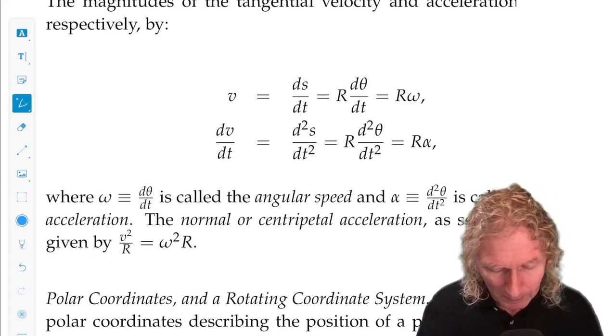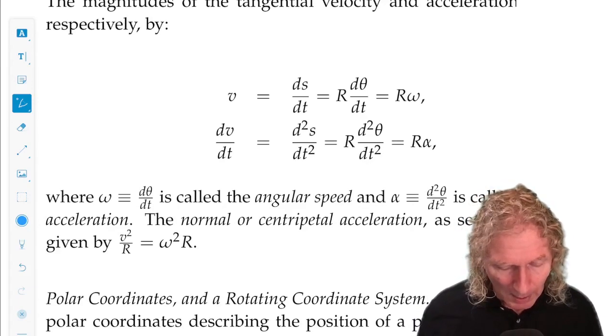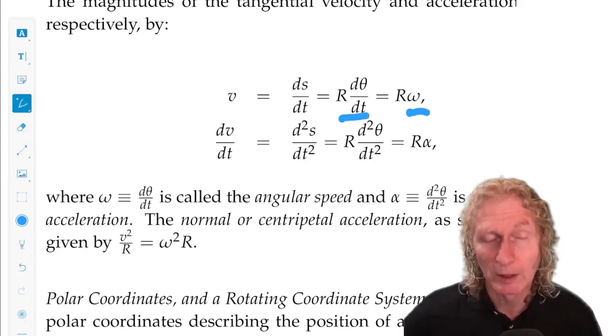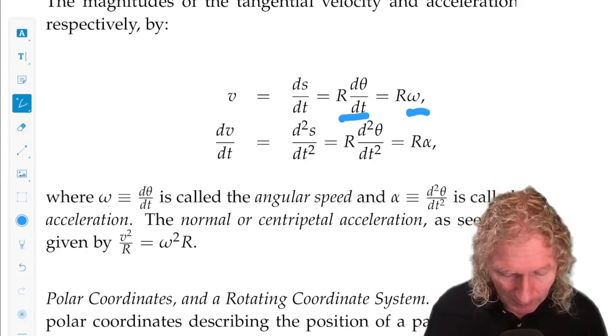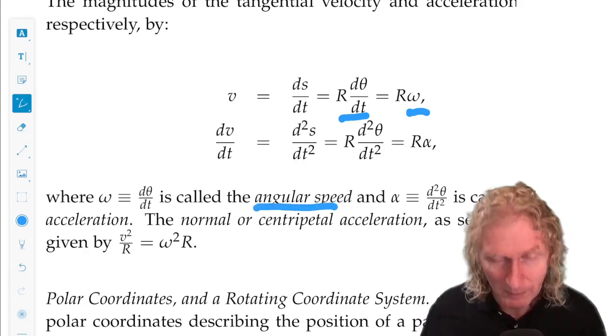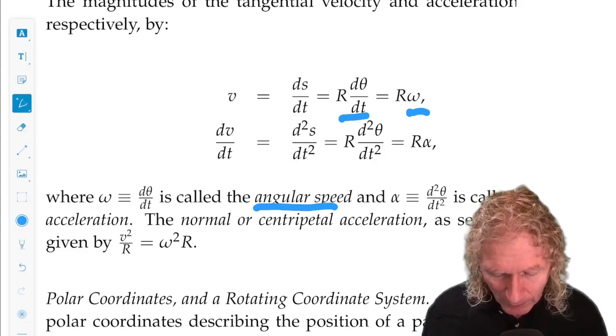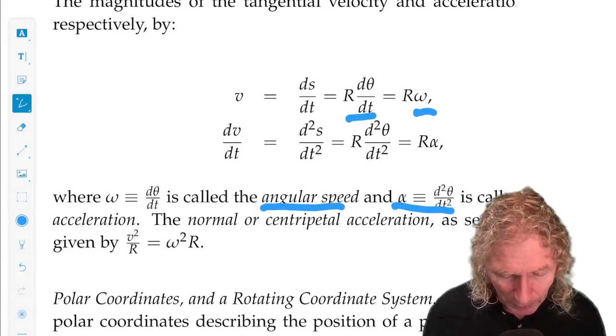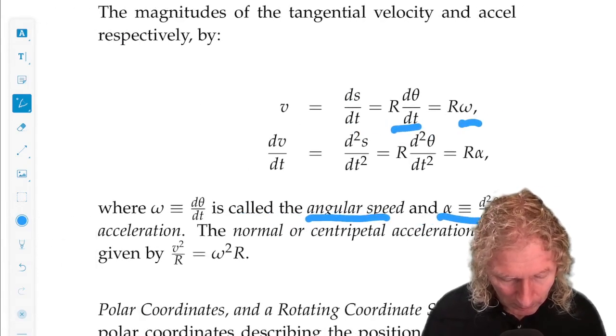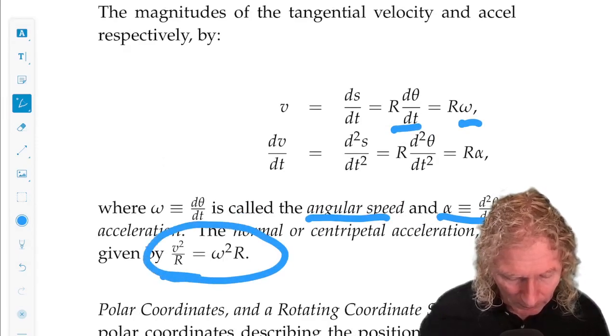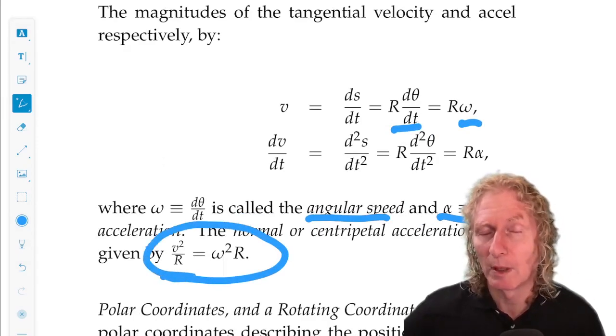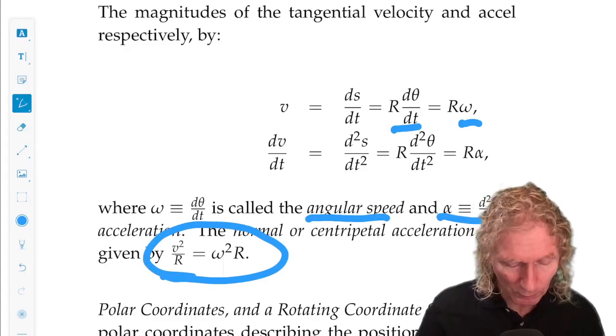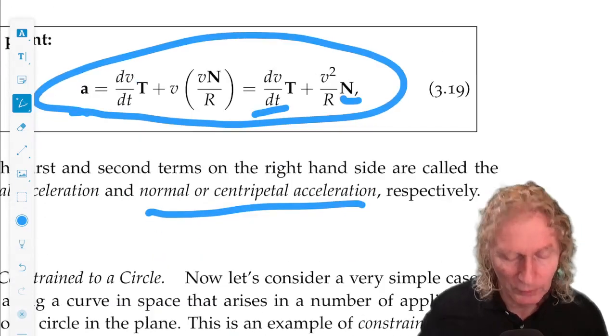And d theta/dt is a quantity, we'll name it omega, that's the angular velocity, or angular speed, just a scalar. And alpha, the second derivative of theta with respect to t squared, is the angular acceleration, and the normal or centripetal acceleration is given by this term. And we get this just from going back to the more complicated formula and identifying terms that I just derived.